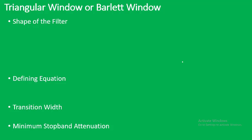For all these kinds of windows we are going to cover these points: the shape of the filter, the defining equation, the transition width, and the minimum stopband attenuation. In an exam, if you get a question like 'compare different kinds of windows,' you can utilize these points for a good answer.